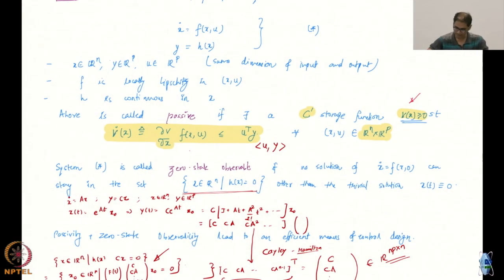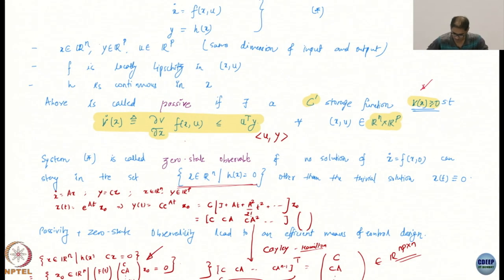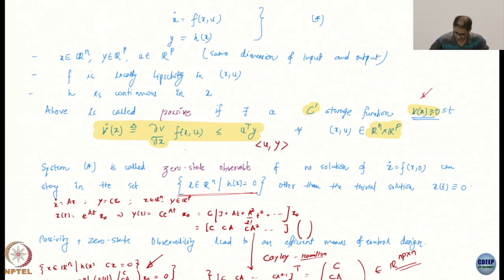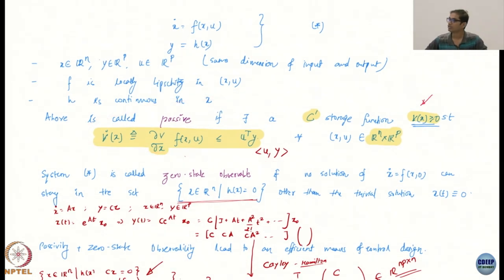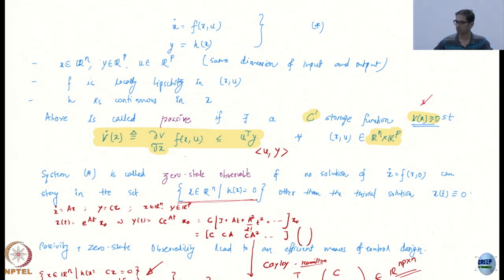Welcome to another session of nonlinear control SC602. We had started off with defining passivity as basically: a system is said to be passive if there is a storage function such that the derivative of the storage function is less than or equal to U transpose Y.